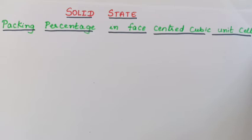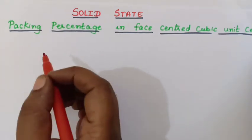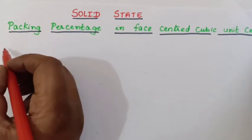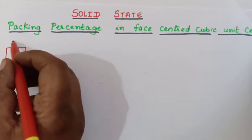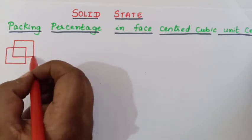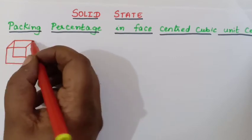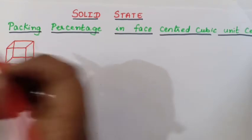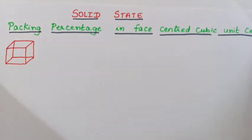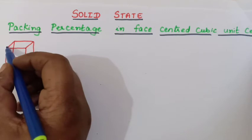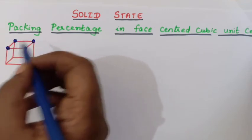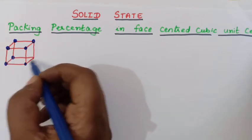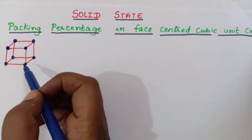So students, first let us draw the unit cell for FCC. So this is the unit cell for FCC. You know that in any unit cell, at the corner the particles will be present. So here are the corner particles — these are the particles which are present in the corner.